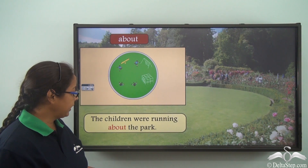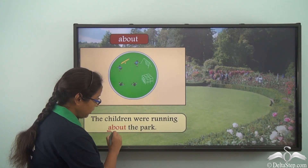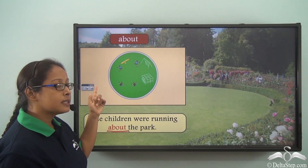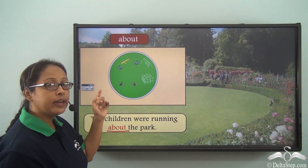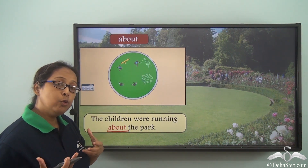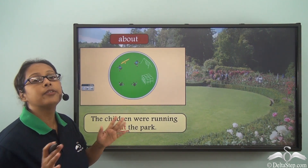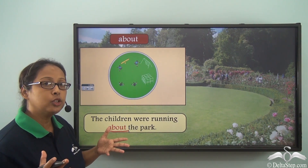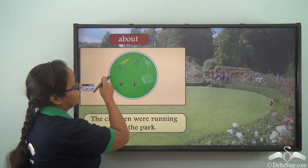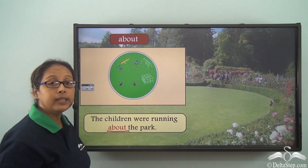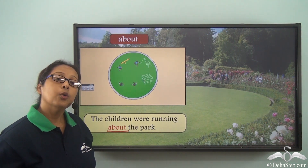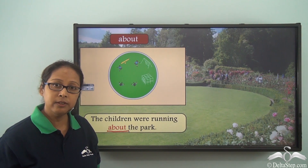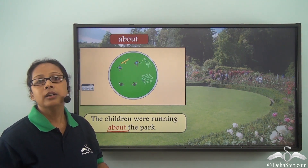The children were running about the park. The preposition is 'about.' Looking at the picture, we can see the children are moving and running around. There is movement involved but it is in random directions — there is no particular direction they are running and no order to their movement. One is running here, another there, one moving this side, the other that side. So 'about' means there is no particular order; movement could be in different directions.